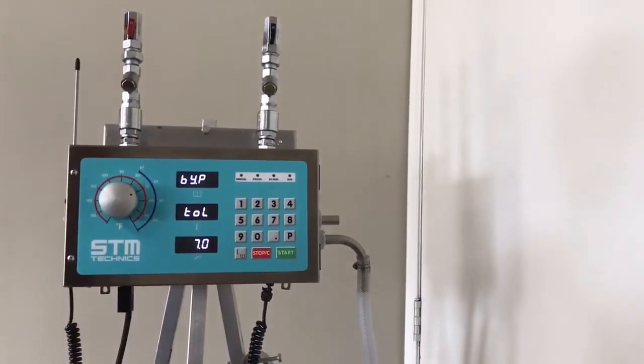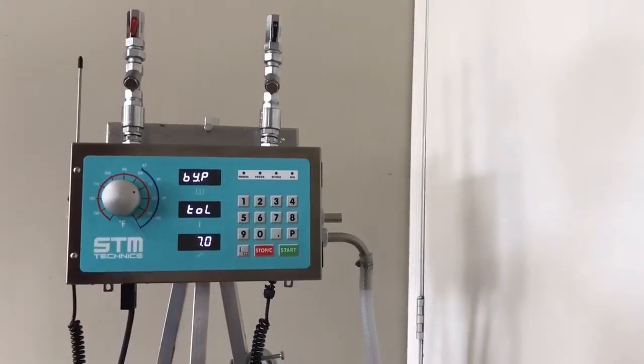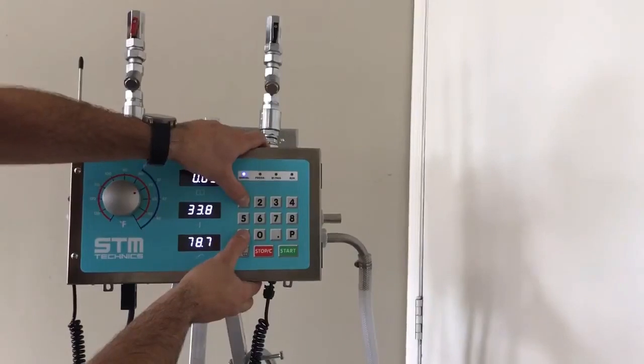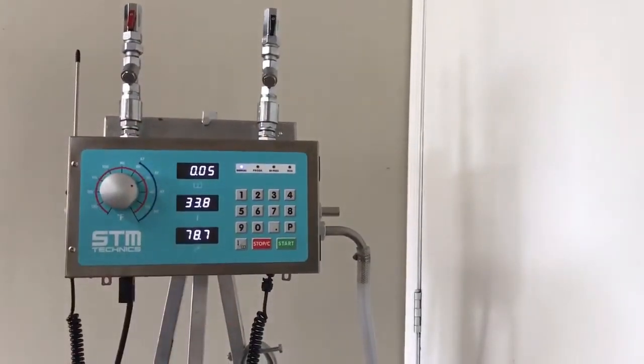This is the end of your internal parameters. The rest is factory set. You won't need to go into those parameters. To get out of that setting, we press numbers 1 and 9 and hold. We go into our home screen.